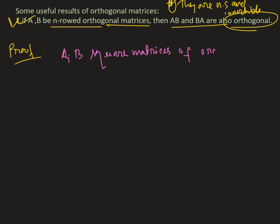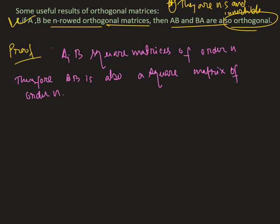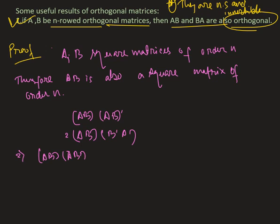AB is also a square matrix of order n. Now, AB times (AB)-transpose can be written as AB times B-transpose times A-transpose. So AB times (AB)-transpose equals A times B times B-transpose times A-transpose.